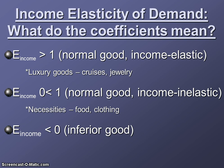And if your answer is a negative number, that means it's an inferior good — as your income goes up, you buy less; or as your income goes down, you buy more. That's how you interpret your answer.